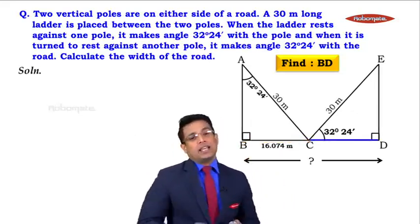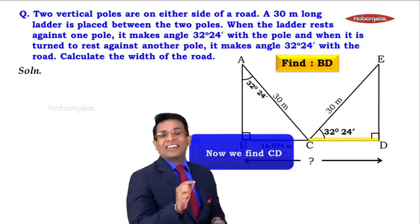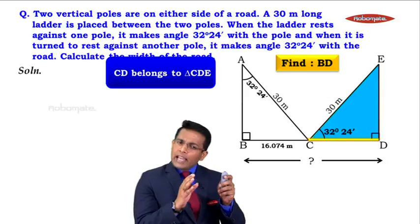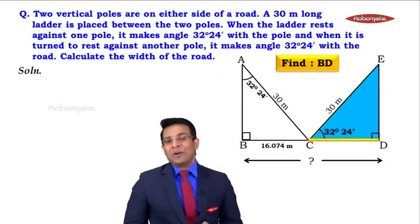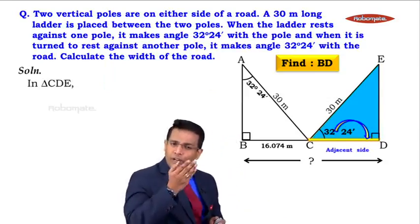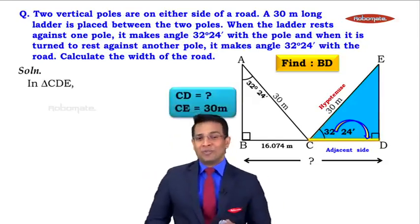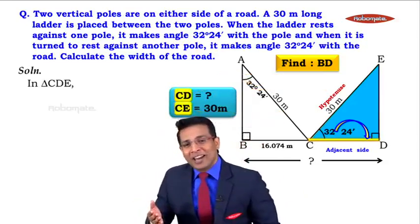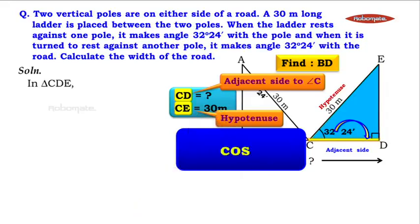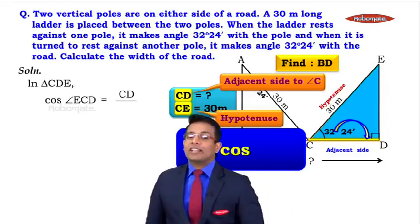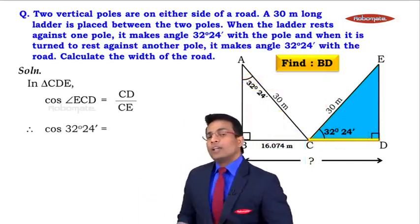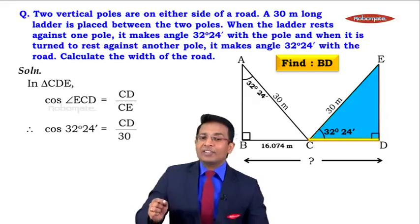Now we need to find CD. CD belongs to right angle triangle CDE. In that triangle, the acute angle is 32 degrees 24 minutes. For that angle, CD is the adjacent side and CE is the hypotenuse. Since we're working with adjacent side and hypotenuse, we use cosine. So: cos(angle ECD) = CD / CE, giving cos(32° 24') = CD / 30.